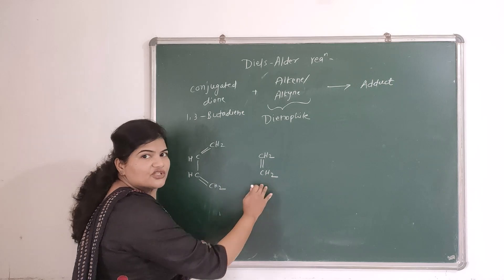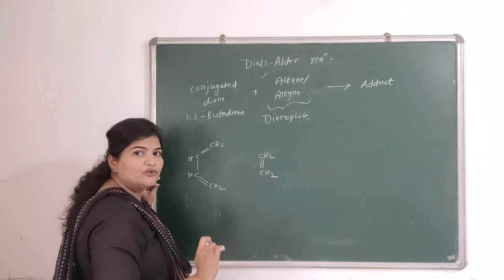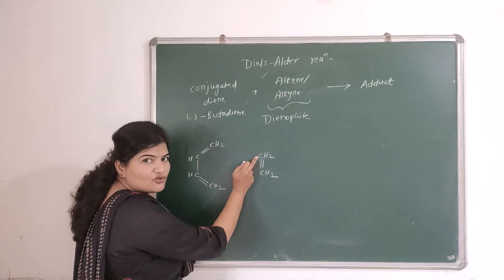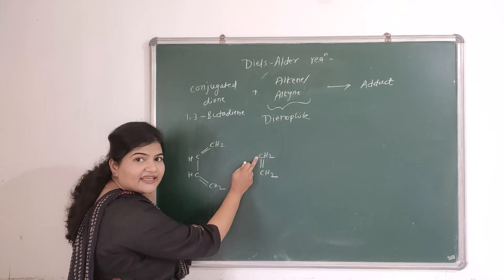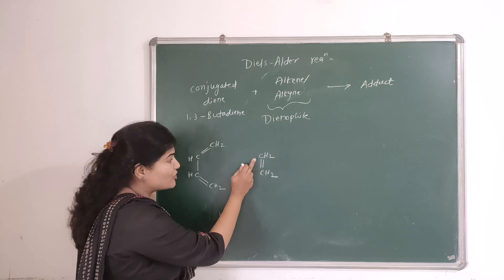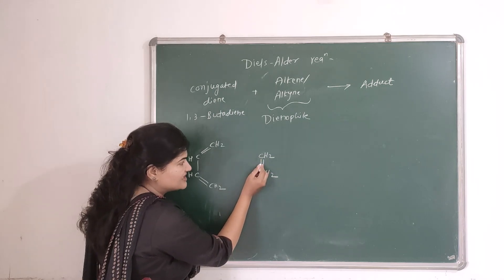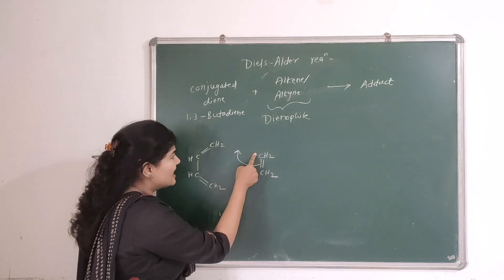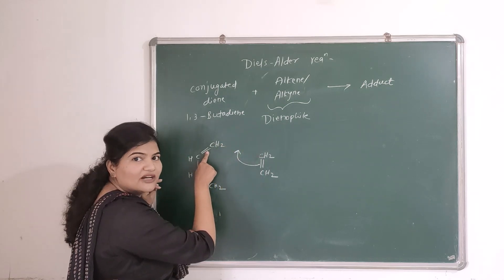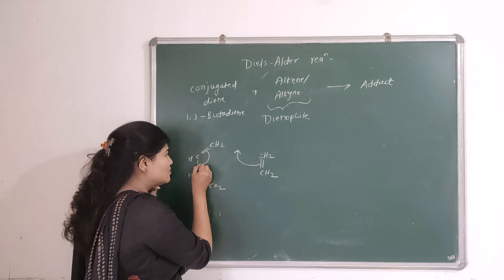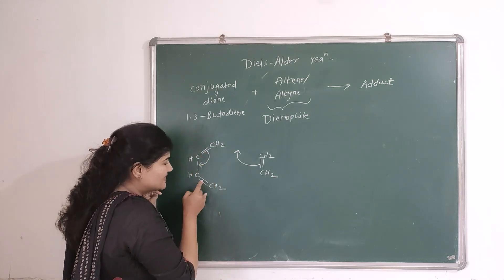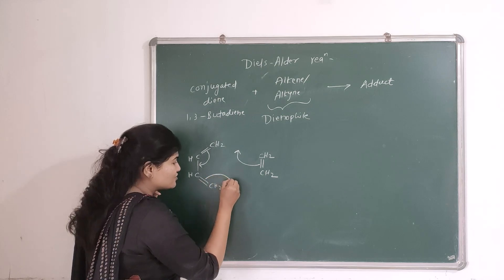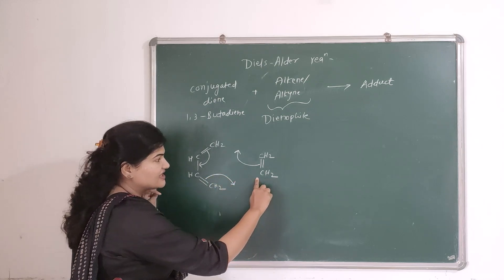Pay attention to how these two structures combine to form a ring. The terminal carbons of the diene and the carbons of ethene need to form new bonds. The pi bond between the first and second carbons of the diene breaks, providing two electrons to form a sigma bond with one carbon of ethene. Similarly, the pi bond of ethene breaks and its electrons shift, and the remaining pi bond of the diene breaks to form a bond at the other end.